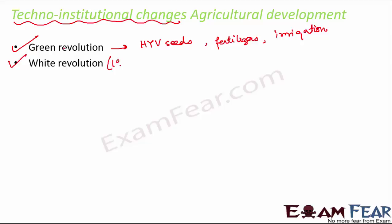Another step taken for agricultural development was the white revolution, brought into picture around the 1970s, also popularly known as Operation Flood. White revolution was a dairy development program with the idea to make dairy products accessible throughout India. The brand Amul — known for Amul cheese, Amul butter, and Amul ice cream — is a very popular dairy brand, and the man behind Amul was Dr. Verghese Kurien, who played a very crucial role in the white revolution.